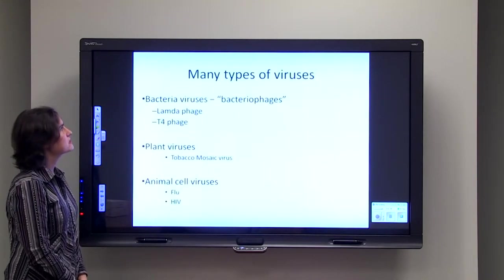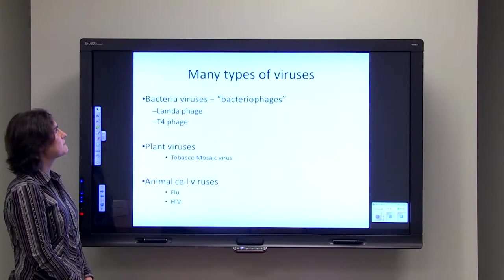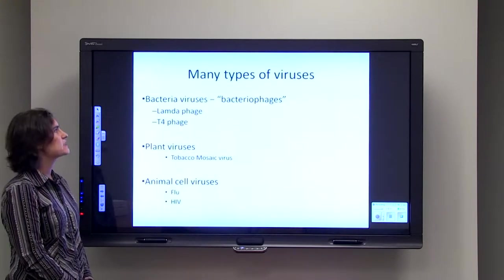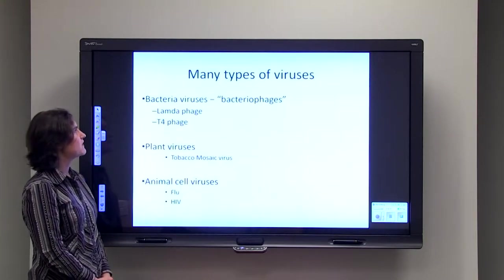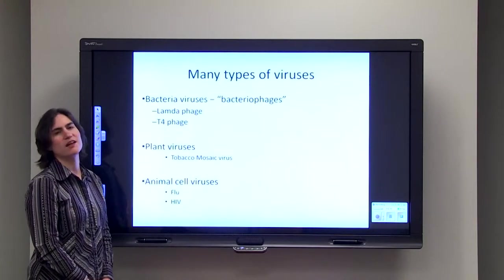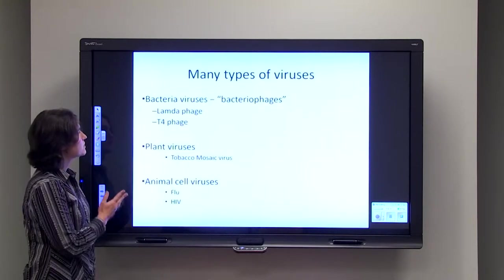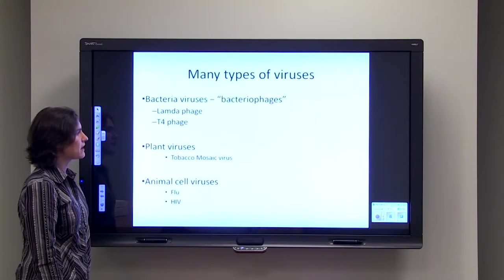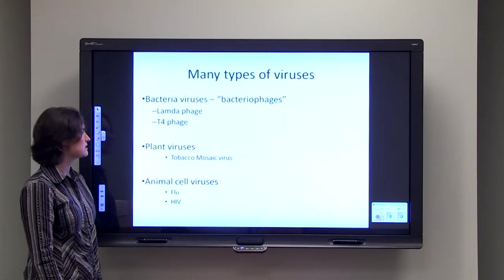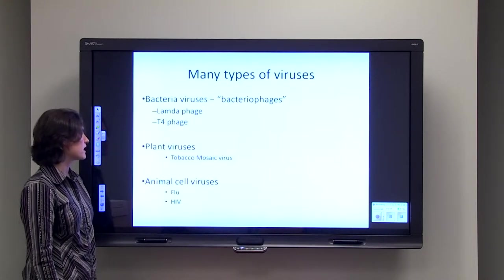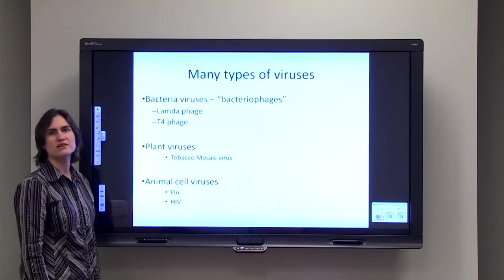Now there's a lot of different types of viruses. We've got some viruses that infect just bacteria, and these guys are called bacteriophages, and these guys can include lambda phage, t4 phage—they have a lot of funny names. We also have plant viruses such as the tobacco mosaic virus that can infect tobacco plants. And then we also have a lot of animal cell viruses like the flu virus and the HIV virus.